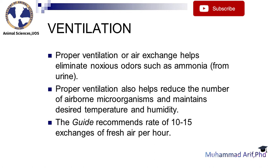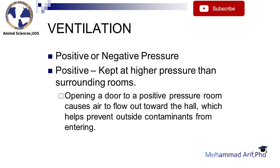Proper ventilation also helps reduce the number of airborne microorganisms and maintains desired temperature and humidity. The guide recommends a rate of 10–15 exchanges of fresh air per hour. Regarding positive pressure ventilation, rooms are kept at higher pressure than surrounding rooms. Opening a door to a positive pressure room causes air to flow out toward the hall, which helps prevent outside contaminants from entering.